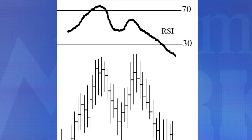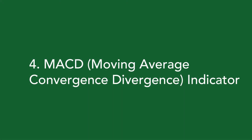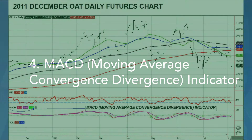Price and RSI divergence suggests a price reversal — RSI gives early warnings and alerts producers to opportunities. In this example, the RSI follows the market creating a similar double top pattern. Here's another example with the 2011 November canola daily futures chart — at the bottom, you can see where the market gets to 75, which means it's overbought, or below 25, which means it's oversold.